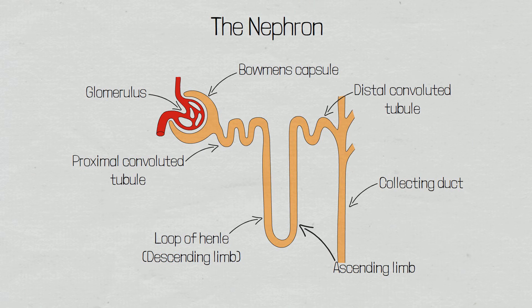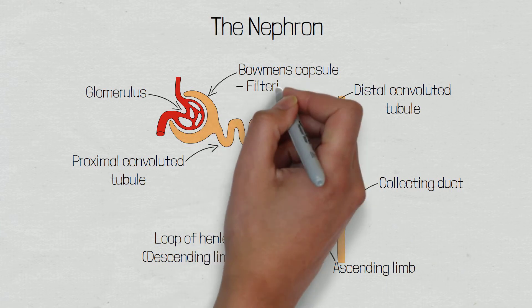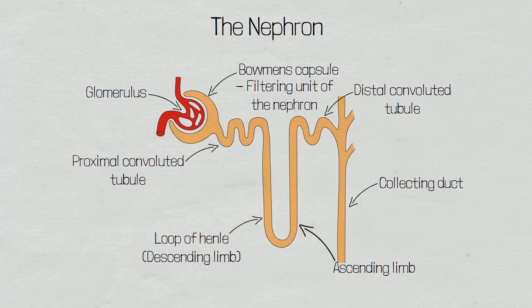The glomerulus, proximal convoluted tubule and distal convoluted tubule are situated in the cortex of the kidney, whereas the loop of Henle and collecting duct are situated in the medulla of the kidney. The Bowman's capsule or glomerular capsule is the filtering unit of the nephron. This is where fluid and small molecules are filtered from the glomerular capillaries and into the capsular space, where it is now known as filtrate.